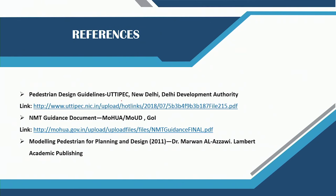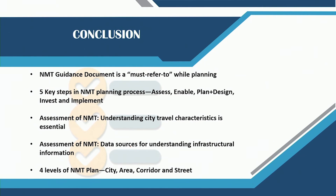Here are some references from which most of the material was drawn — these can be downloaded for free, and the third one is a textbook for further reading. In today's lecture we have looked at the first step in the five key steps of planning for NMT: assessment, understanding city-level characteristics, different data sources to gather information about your city, and how to plan for different scales of NMT infrastructure. Thank you.